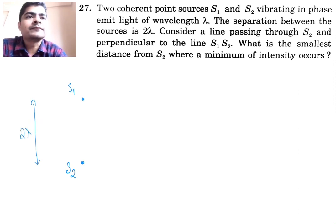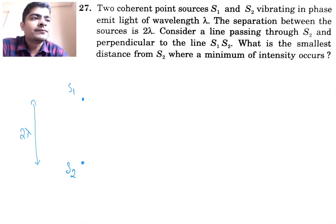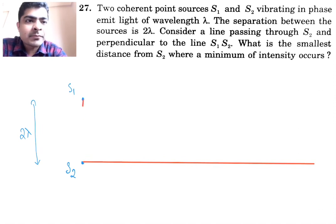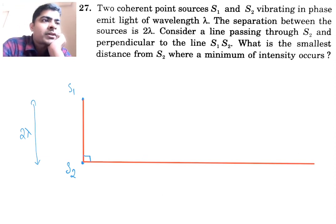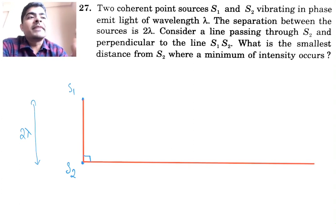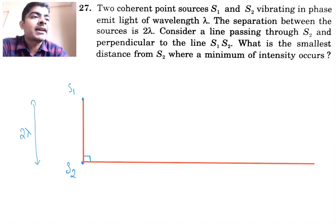Consider a line through s2 and perpendicular to the line s1-s2. What is the smallest distance from s2 where a minimum of intensity occurs? So from s2 we draw a line perpendicular to s1-s2, meaning this angle is 90 degrees. As you move along this new line, where is the minimum distance from s2 to obtain destructive interference?